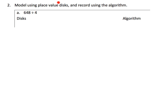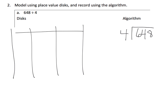Now we're supposed to do both the place value disks and the standard algorithm. I'm going to write 648 divided by 4, then model the disks. Here's our hundreds, tens, and ones. We model 648: 6 hundreds, 4 tens, and 8 ones. We are going to divide by 4 — 4 groups. We have 6 dots to sort into 4 groups, so 4 groups each get 1 dot, and we have 2 dots left over that will get exchanged.